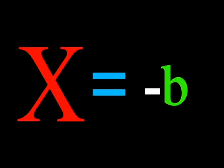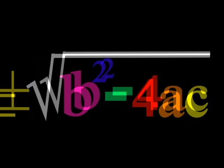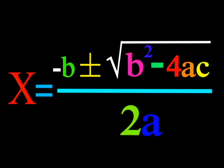x equals negative b, plus or minus the square root of b squared minus 4ac, all over 2a.